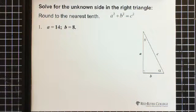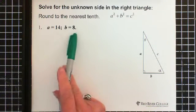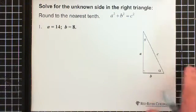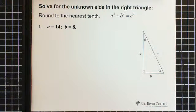So here we have a right triangle. Side a is 14, side b is 8. You're to solve for the unknown side, which would be c. Pause the video, give it a whirl, and then start it up.